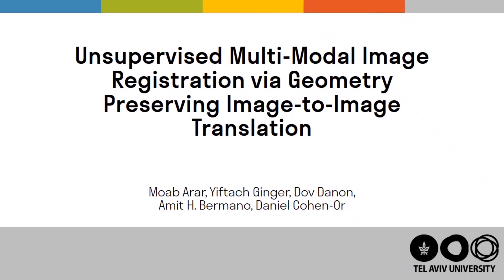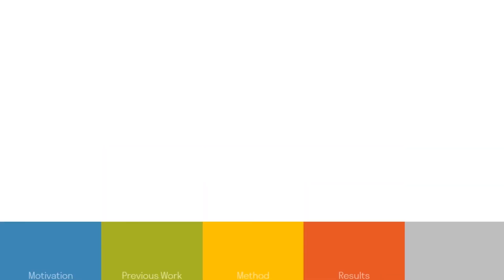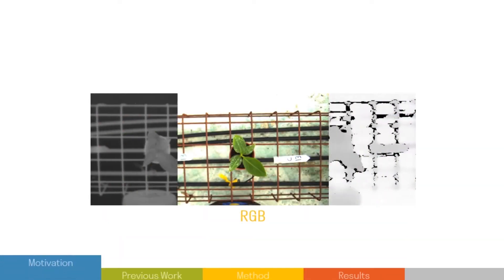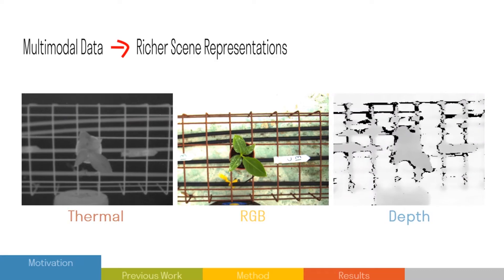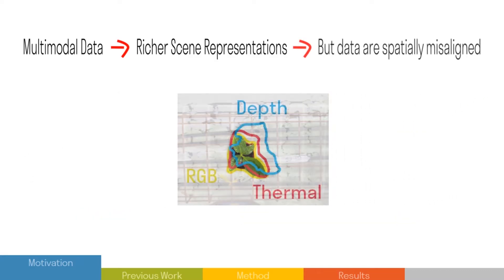In this paper, we present an unsupervised multimodal image registration method using an image-to-image translation network. Multimodal data provide richer scene representation, but the data are usually spatially misaligned.